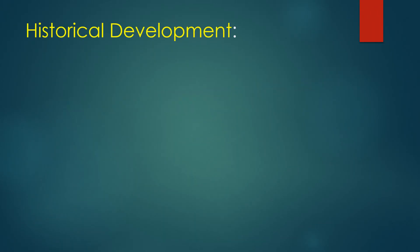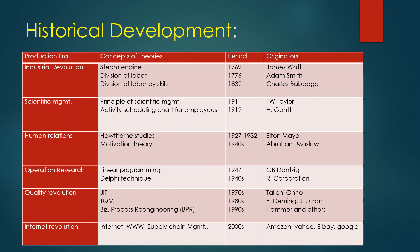Now for the historical development of operations management: during the Industrial Revolution, the steam engine was discovered in 1769 by James Watt. Division of labor was first introduced by Adam Smith in 1776, and division of labor by skills was introduced by Charles Babbage in 1832. Under scientific management, the Principles of Scientific Management was first introduced by F.W. Taylor in 1911. The activity scheduling chart for employees was first introduced by H. Gantt in 1912.